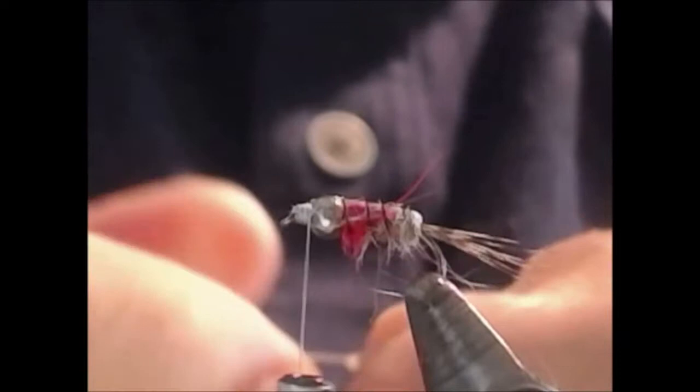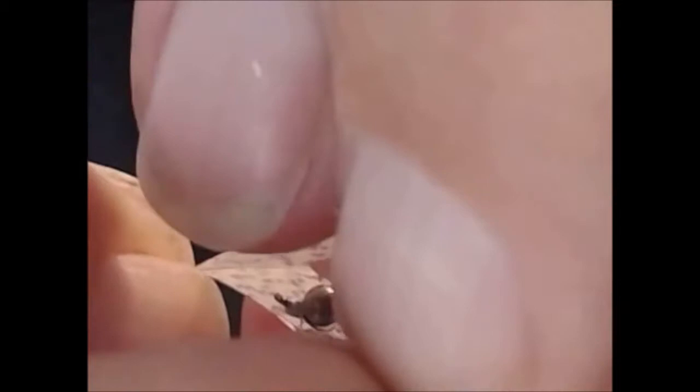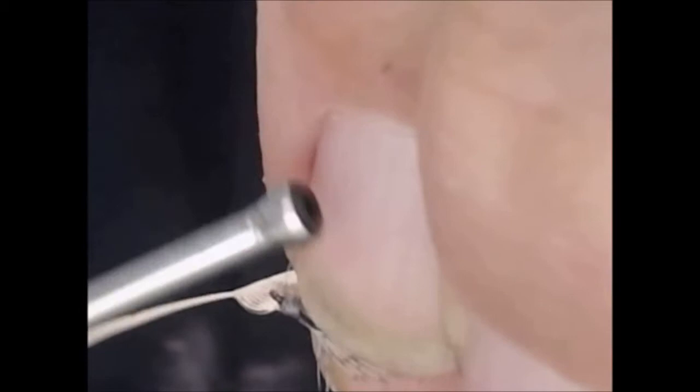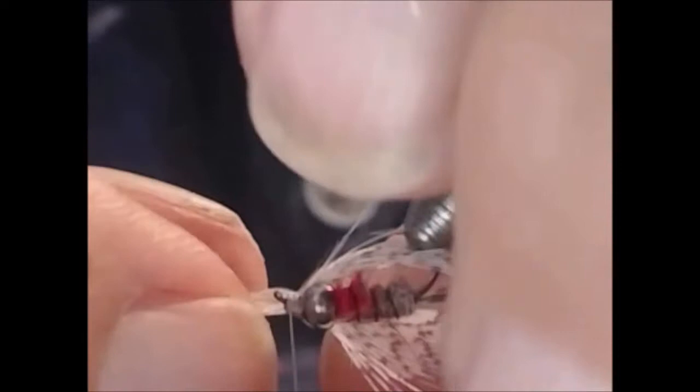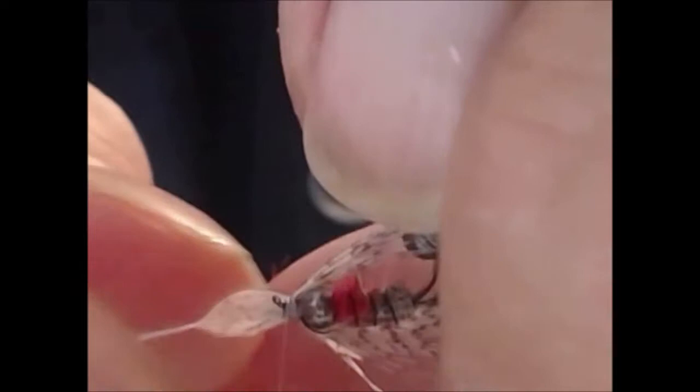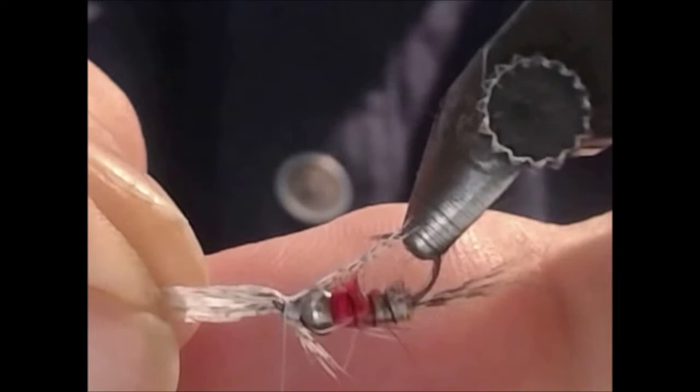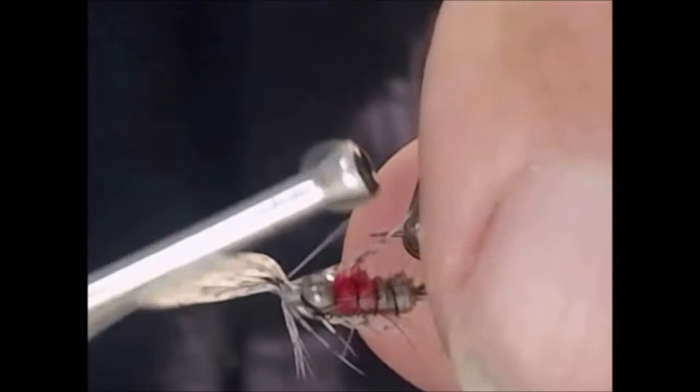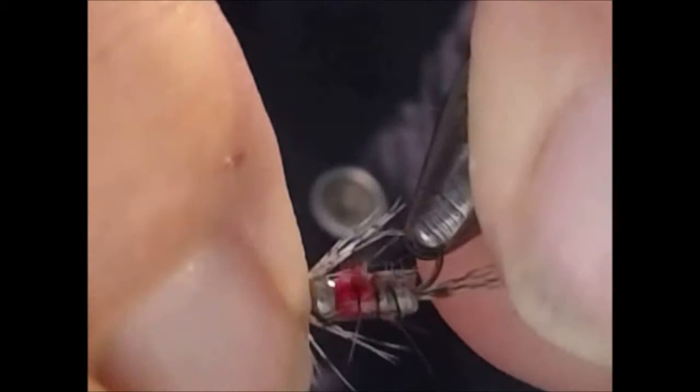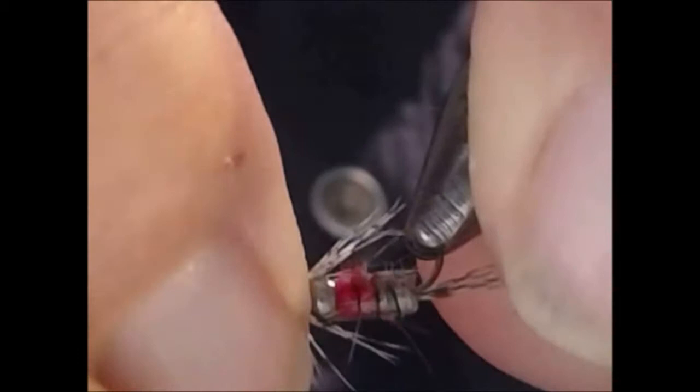We'll even up the hackles at the bottom and turn our vise upside down. We're going to secure this leg right in front of the bead with about three soft wraps. That will allow us then to pull our legs forward to size. Once we get them there, we'll put in some secure wraps, some tight wraps, and adjust just a little bit with our fingers.